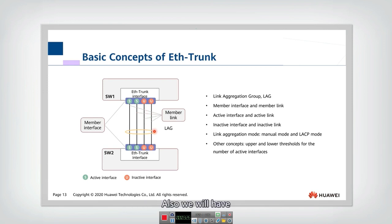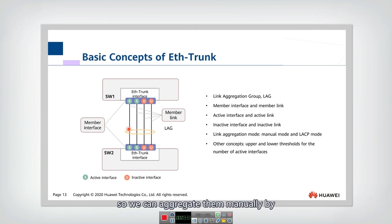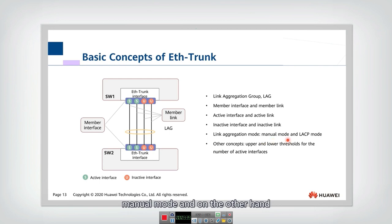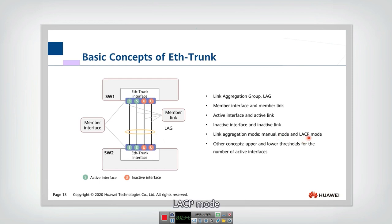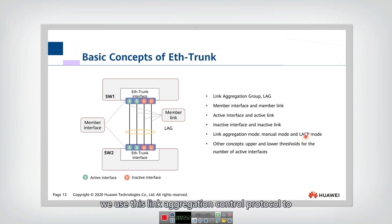There are two different link aggregation modes. We can aggregate links manually using network administrator commands — this is called manual mode. On the other hand, we can use automatic aggregation via LACP mode, which stands for Link Aggregation Control Protocol.